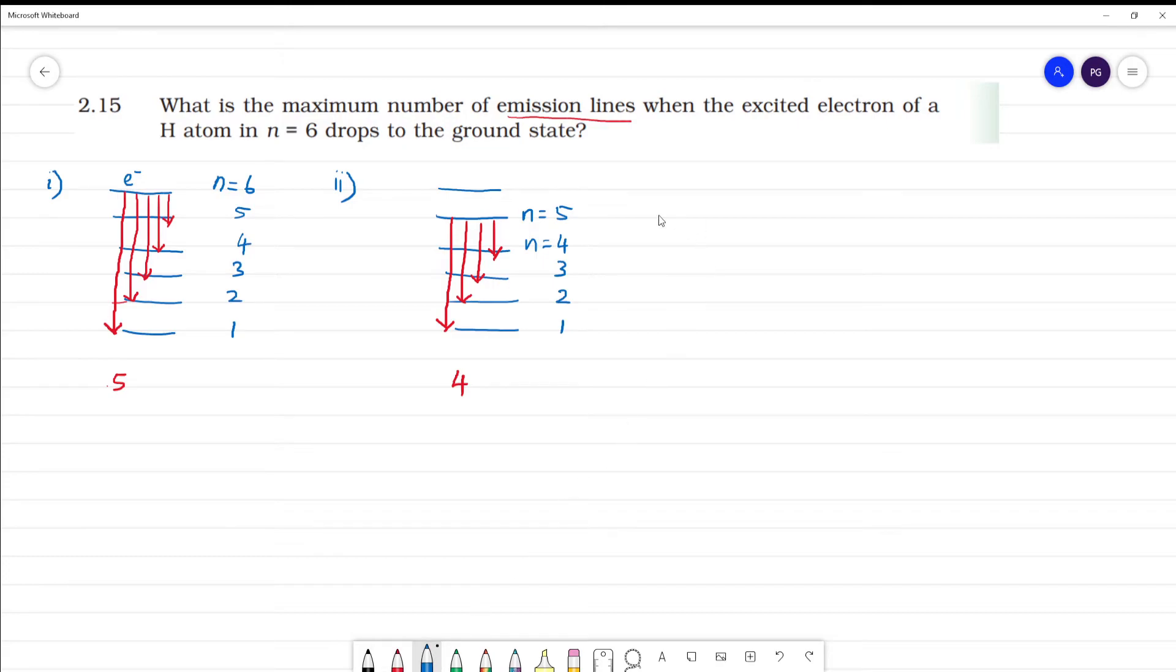Next, third case. From n equals 6 to n equals 5, to 4th energy state. 4, 3, 2, 1. Now how many emission lines are there? 1, 2, 3. So this is 3 emission lines.